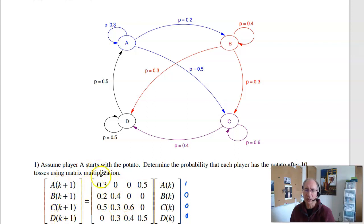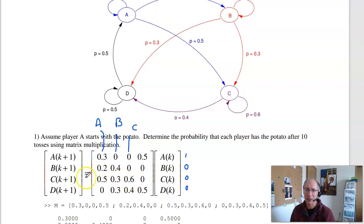When I multiply, this is where the potato is after one toss. This first column is times A. So if A has the hot potato, after one toss, A will have it 30% of the time. A gives it to B 20%, A gives it to C 50%. If B has the hot potato, column 2, then B never passes it to A. B keeps it 40% of the time, passes to C 30%, passes to D 30%. And likewise for C, if C has it, C keeps it 60% of the time, passes to D 40%, and D. Notice that all the columns add to 1. That's required for probabilities.